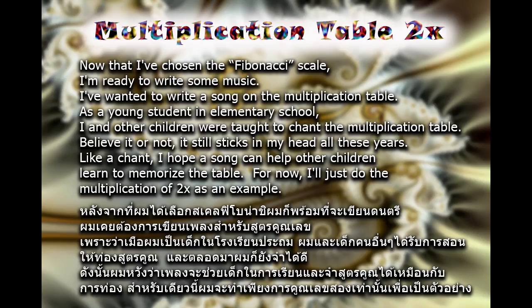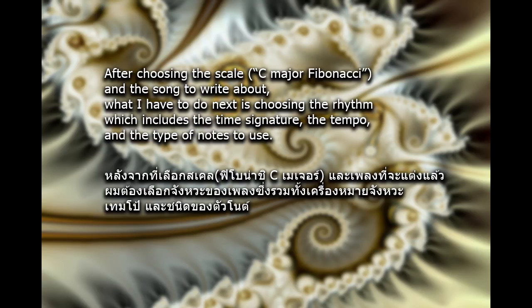For now, I'll just do the multiplication of two times as an example. After choosing the scale — C major Fibonacci — and the song to write about, what I have to do next is choosing the rhythm, which includes the time signature, the tempo, and the type of notes to use.